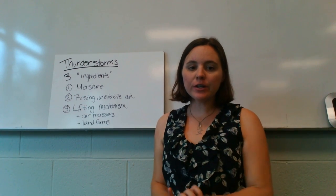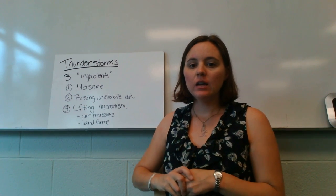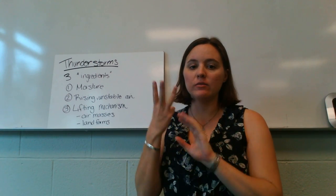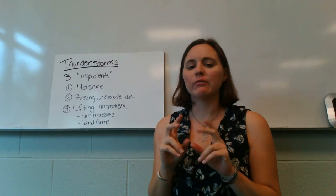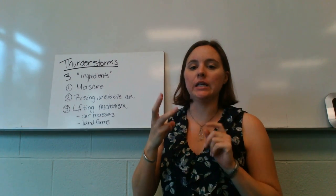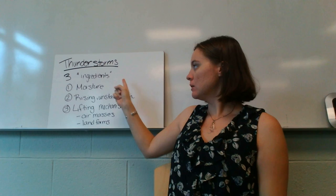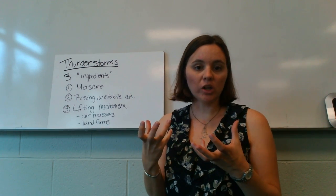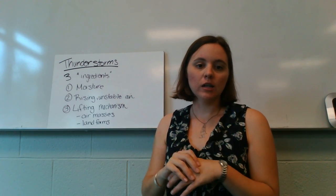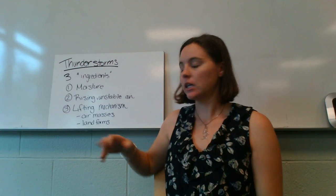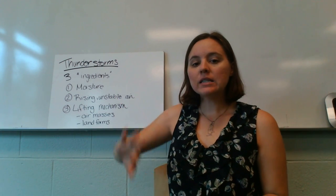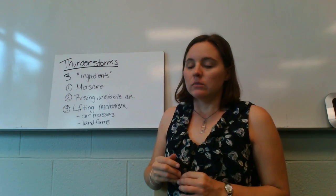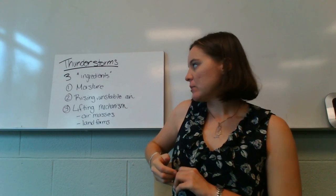We are talking about thunderstorms today. To make a thunderstorm, the atmosphere has to meet three conditions — three ingredients. The first one is moisture. We have to have water in the air so that it can form raindrops later. We also have to have rising unstable air, and that's where some warmth can come into play.